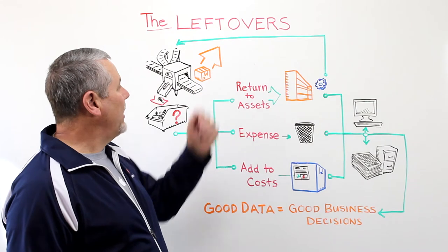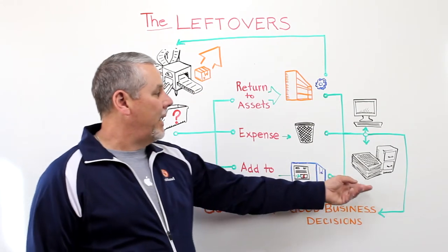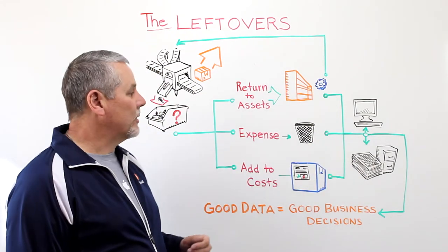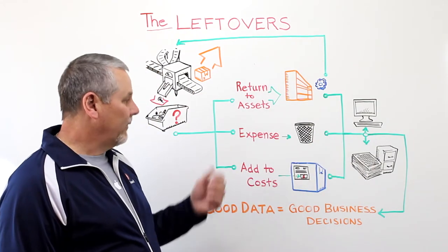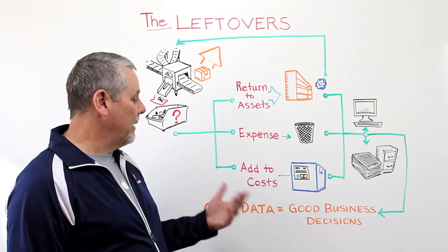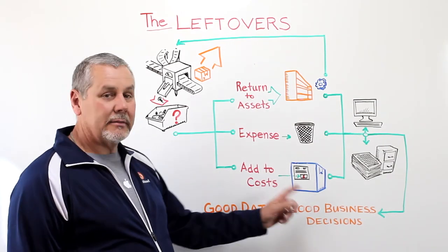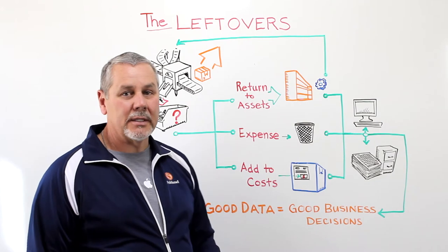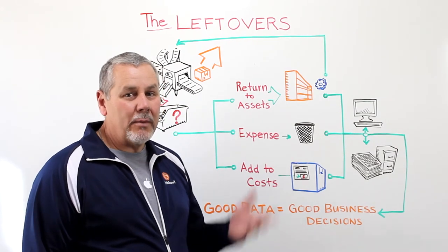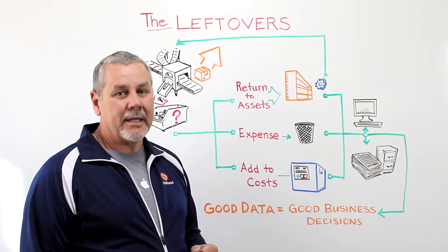So look at how you're handling your leftovers. If you're doing it manually, consider a software solution like Fishbowl Manufacturing that will help you speed up the process, be more accurate, have good data, and make good business decisions. That's it for this Whiteboard Wednesday. Join us next week. Thanks.